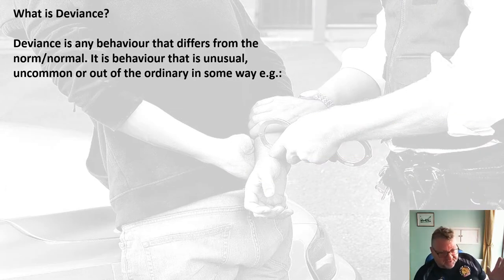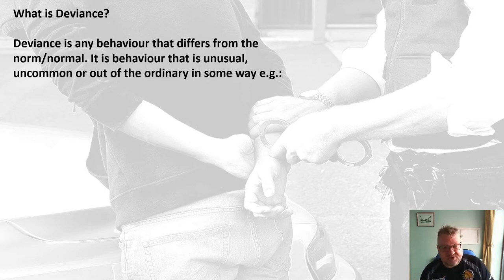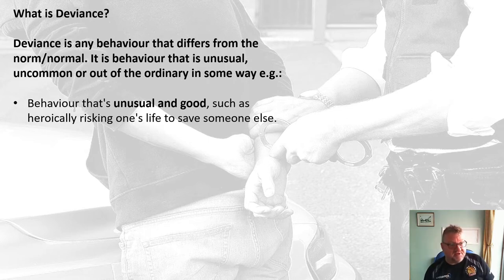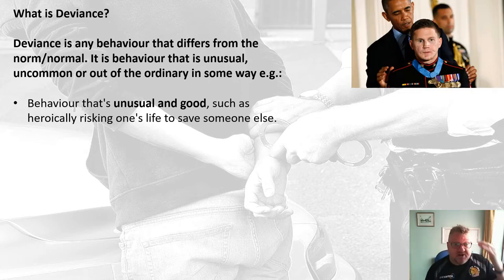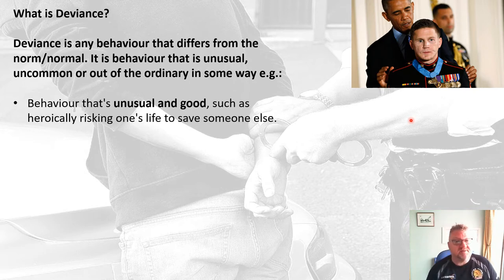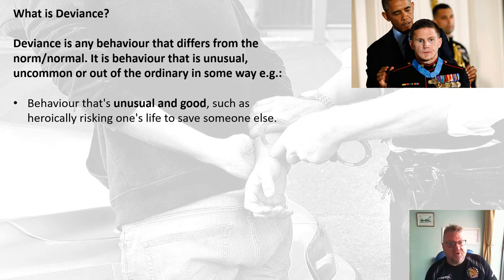Deviance is any behaviour that differs from the normal — behaviour that's unusual or uncommon, out of the ordinary, in some way extraordinary. It can be seen in different ways. Usually in the textbooks it focuses on negative types of deviance, but there can be positive types. So you could have behaviour that's unusual but good, such as heroically risking one's life to save someone else. This US Marine is being given the Congressional Medal of Honour by then President Barack Obama because he threw himself on a grenade to save his comrades, suffering loss of an eye and disfigurement. That would be seen as deviant behaviour because it's not the norm for people to do that.